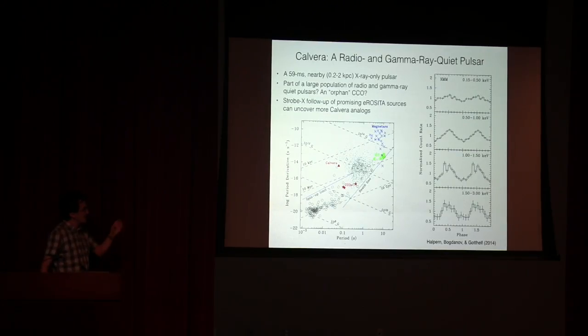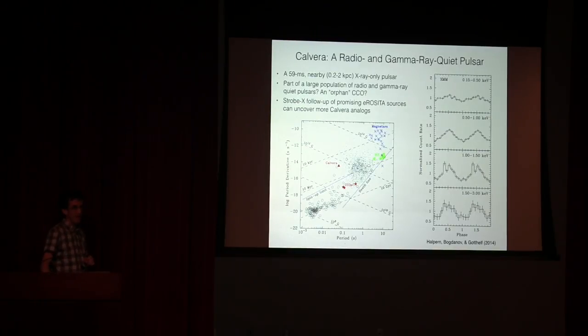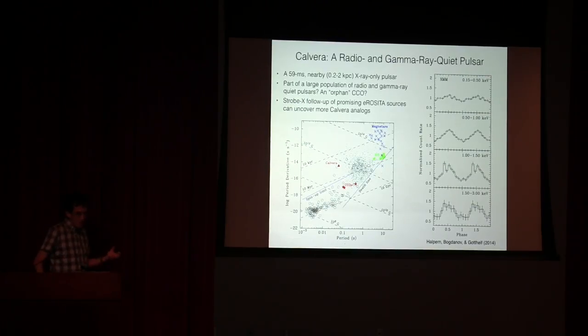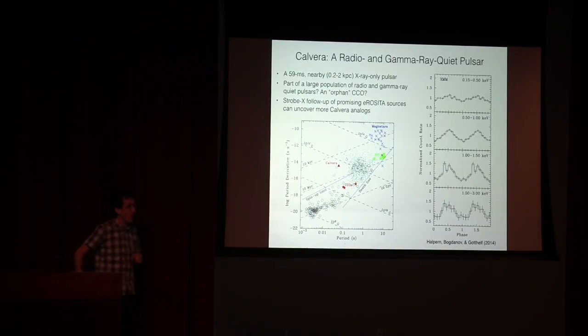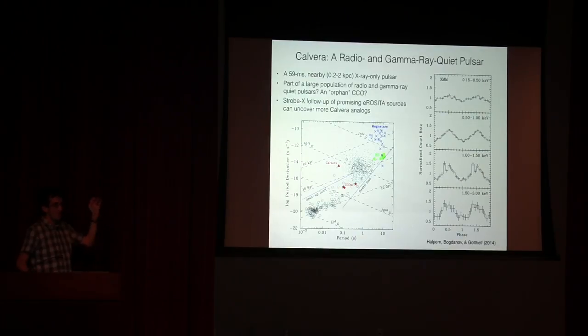Another transition object that's worth looking at with Strobe X are things like Calvera. This is an object that was originally thought to be one of the population that I showed you before, but instead of having a long spin period in a high magnetic field, it instead has a rather short intermediate spin period, somewhere between very young pulsars and older pulsars. We think this could be a number of different populations. It's quite nearby, but we don't really know what's going on with it. So understanding Strobe X follow-up of promising eROSITA sources to discover pulsations and figure out in which population of objects do they lie will help us understand: is this just a really odd one-off object, or is it the tip of some underlying population iceberg?